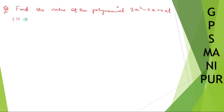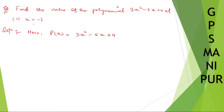Part (i): x is equal to minus 1. Solution — we have p(x) is equal to 3x² minus 5x plus 4. According to the question, we need to find the value when x is equal to minus 1. So now p(−1) is equal to — instead of x, put minus 1.